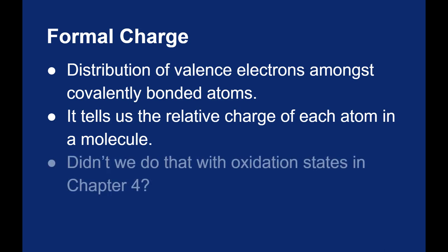Before we go further, you might be thinking that we already did that in chapter 4 when we assigned oxidation states. Formal charge is similar — we are looking at relative charge — but it does it differently. When we dealt with oxidation states, we considered everything to be ionic: the more electronegative element took the electrons, the more electropositive element gave the electrons, and there really wasn't any sharing of electrons.